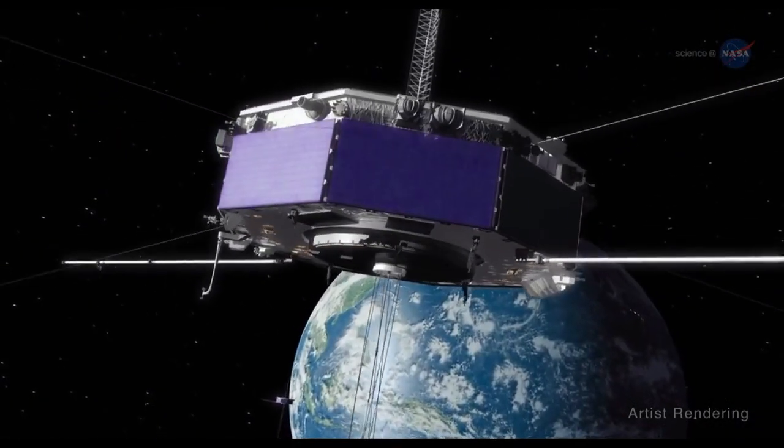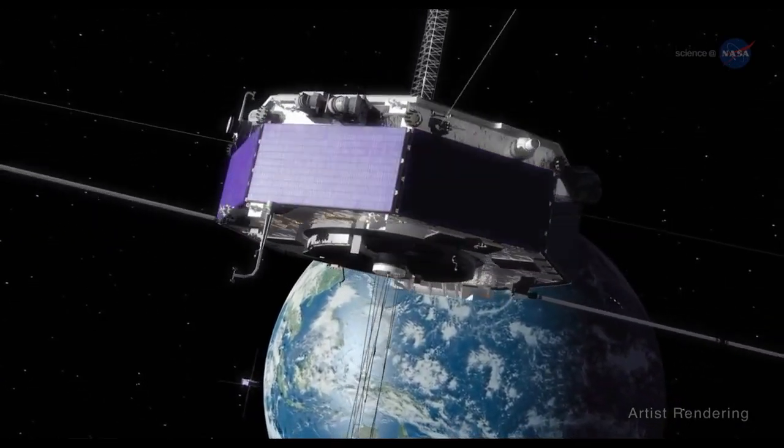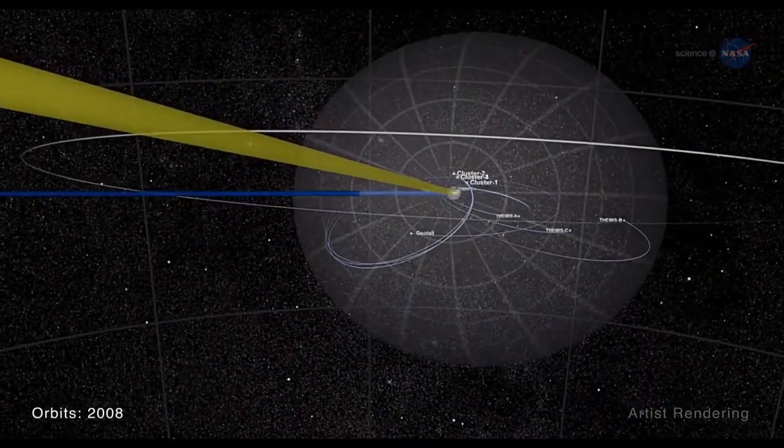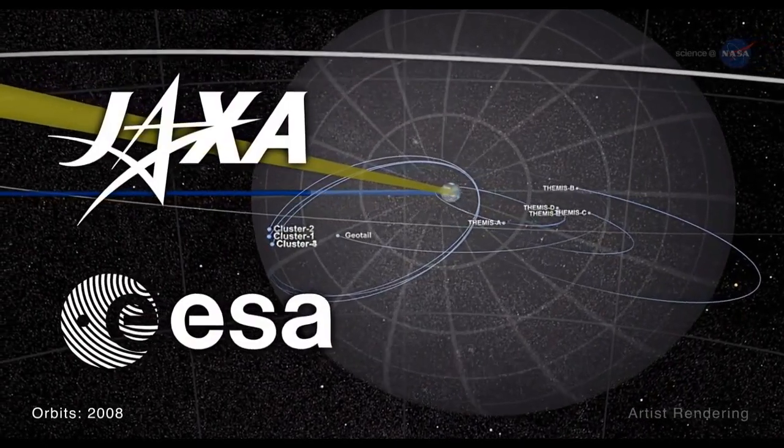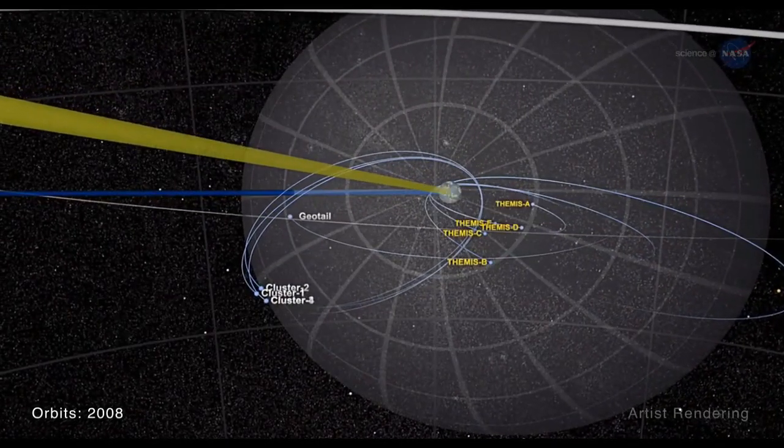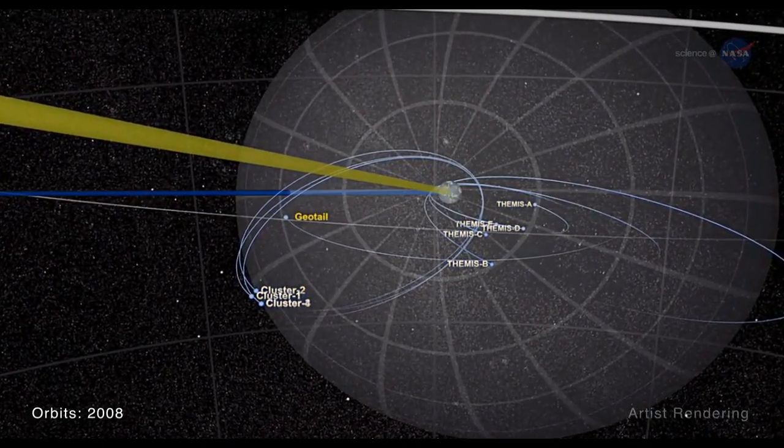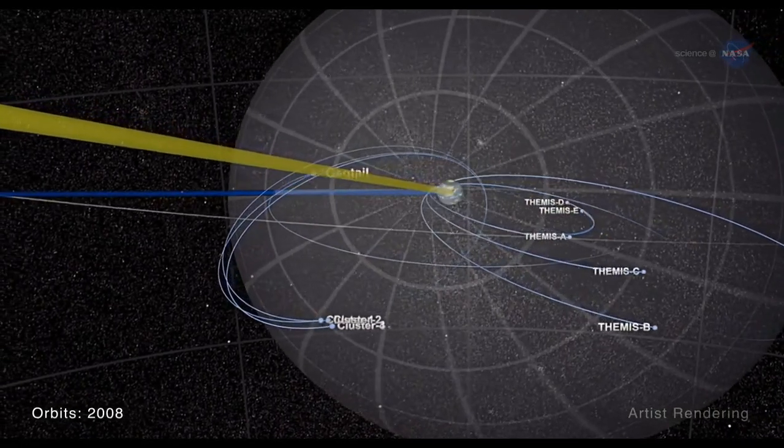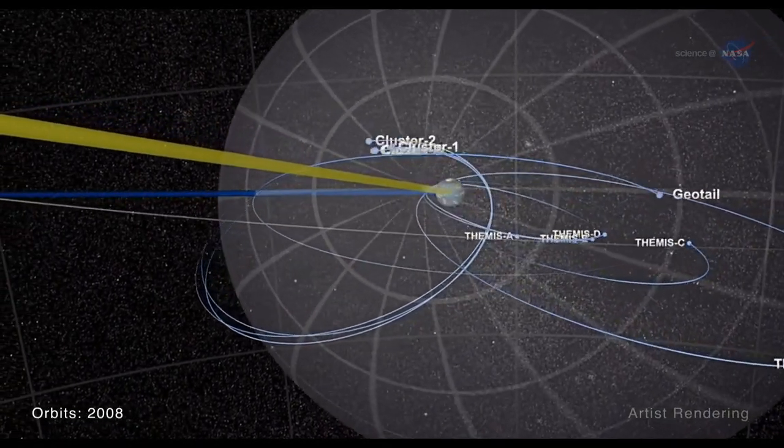MMS has since been conducting a similar hunt in the magnetosphere's tail. MMS complements missions from NASA and partner agencies such as Themis, Cluster, and Geotail, contributing critical new details to the ongoing study of Earth's magnetosphere.